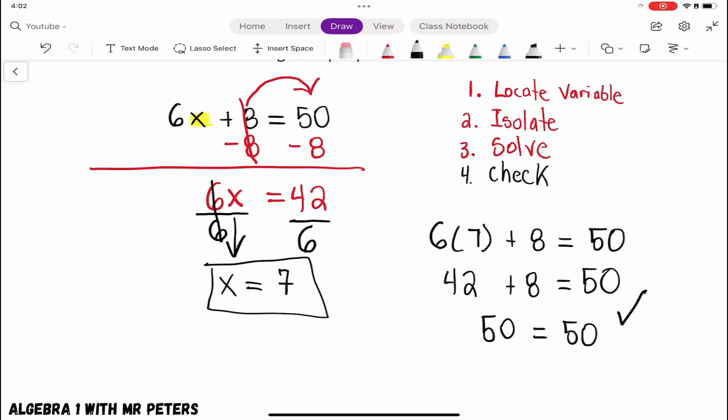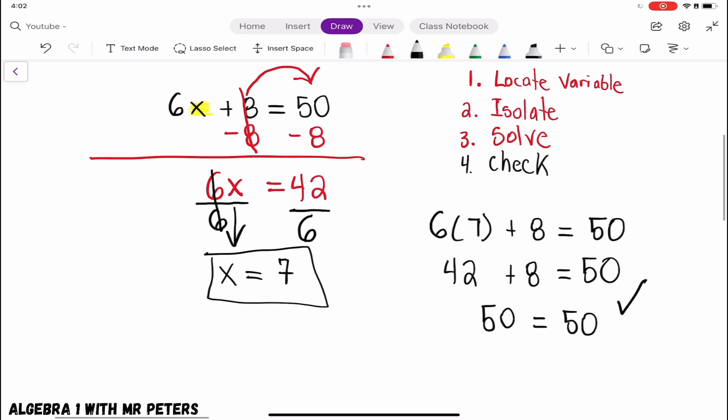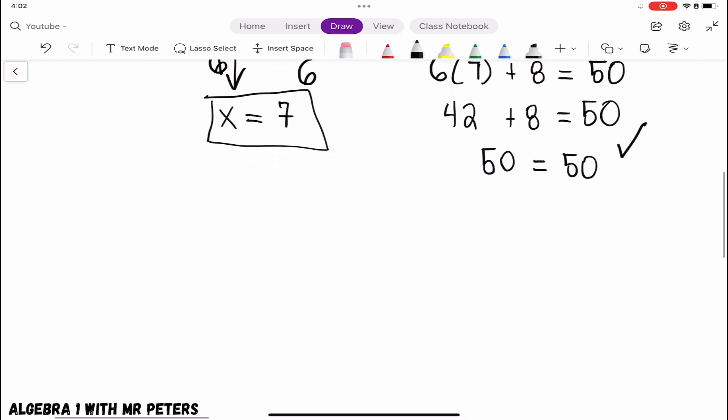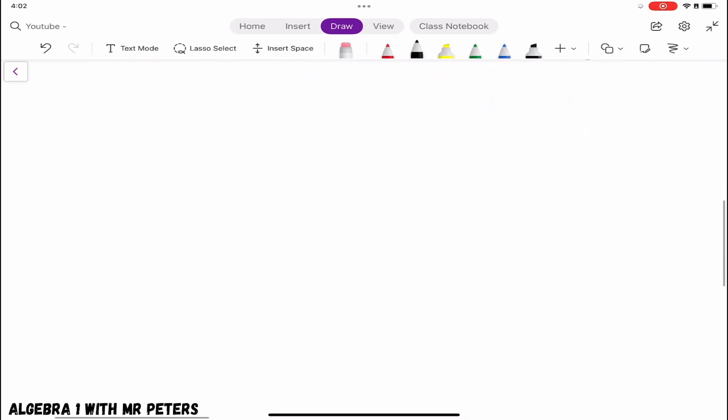Alright. So let's go on to another problem. But in this problem, we're going to switch it up a little bit. So let's say in our second problem, we just so happen to have a fraction. So let's say we had 3x over 5, or 3 over 5x plus 22 is equal to 28.